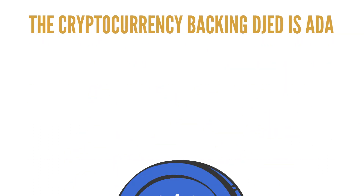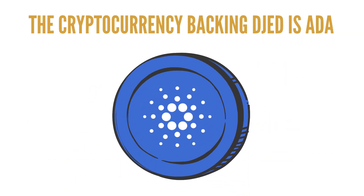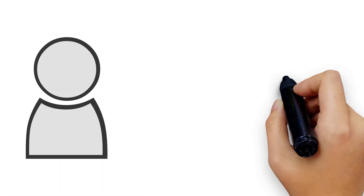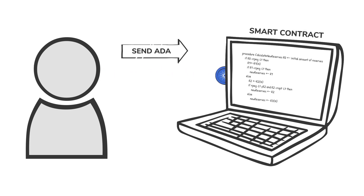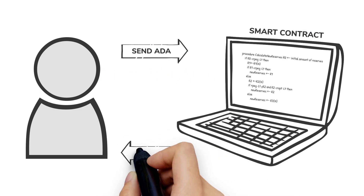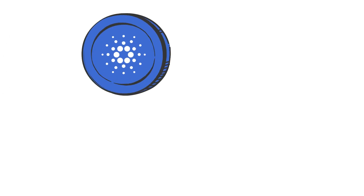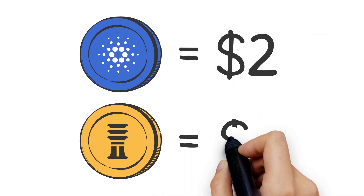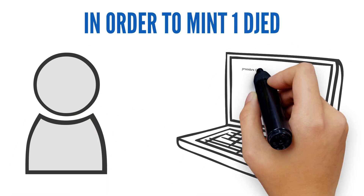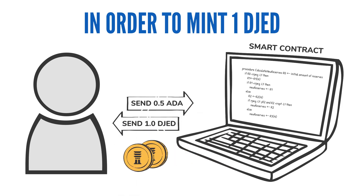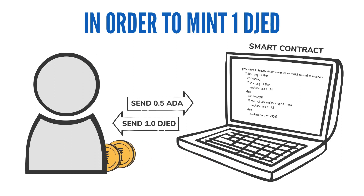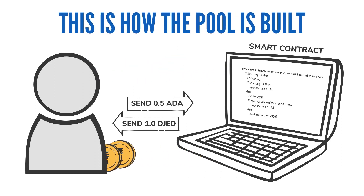The cryptocurrency that will be backing JED is ADA. In order to mint the JED stablecoin, the user will need to interact with the smart contract by sending ADA to its address, after which the contract will send JED back to the user. Let's assume ADA is worth two dollars and JED is worth one dollar, so in order to mint one JED the user needs to send 0.5 ADA to the contract. This process can be repeated — users can send more and more ADA to the contract and get more JED. This is how the contract builds its pool.